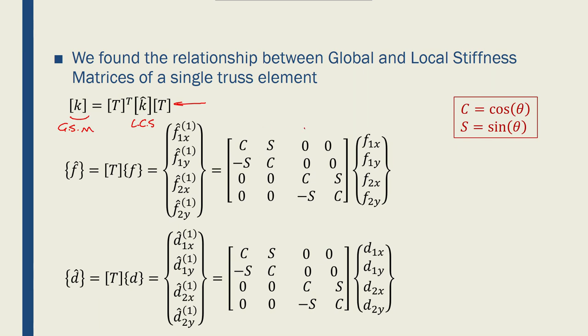So let's define a convention here that C is equal to cos theta and S is equal to sin theta, and we will use that to populate our matrices, either transformation matrix or the stiffness matrices.